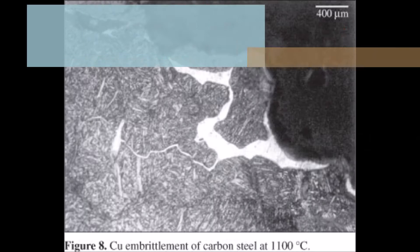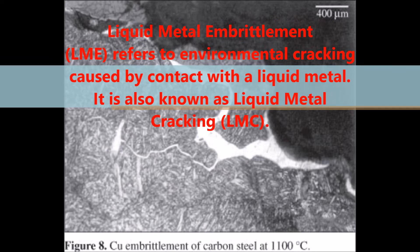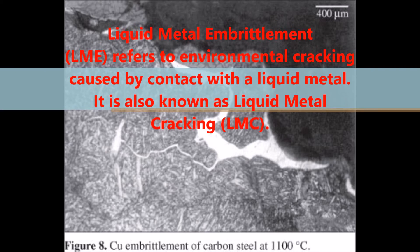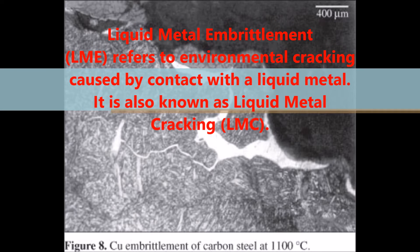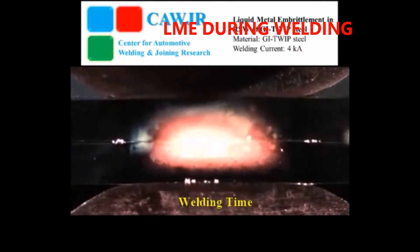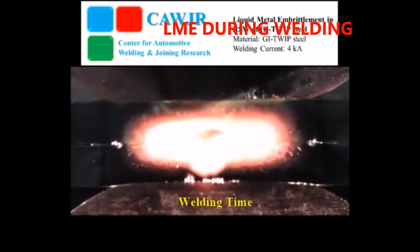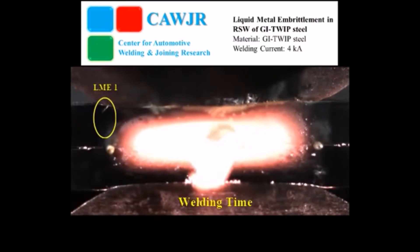There is a specific combination of liquid metals and stressed metals or alloys that can lead to catastrophic intergranular cracking, which defines liquid metal embrittlement. During welding, liquid metals interact with the embrittlement-susceptible metal and form cracks at focal points.